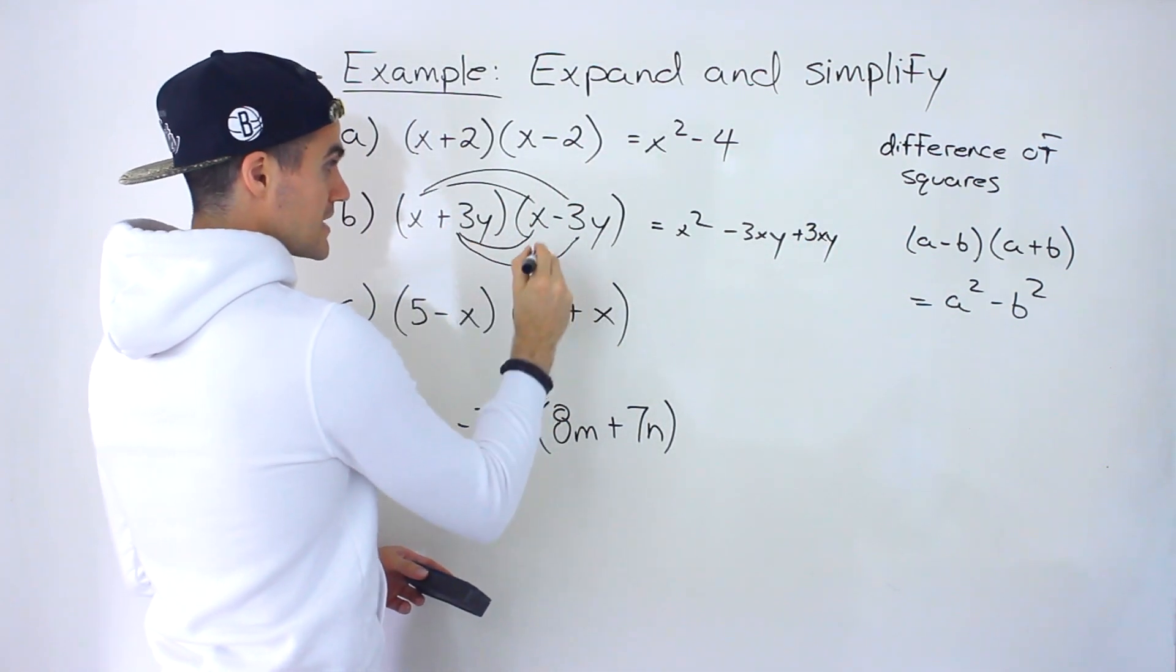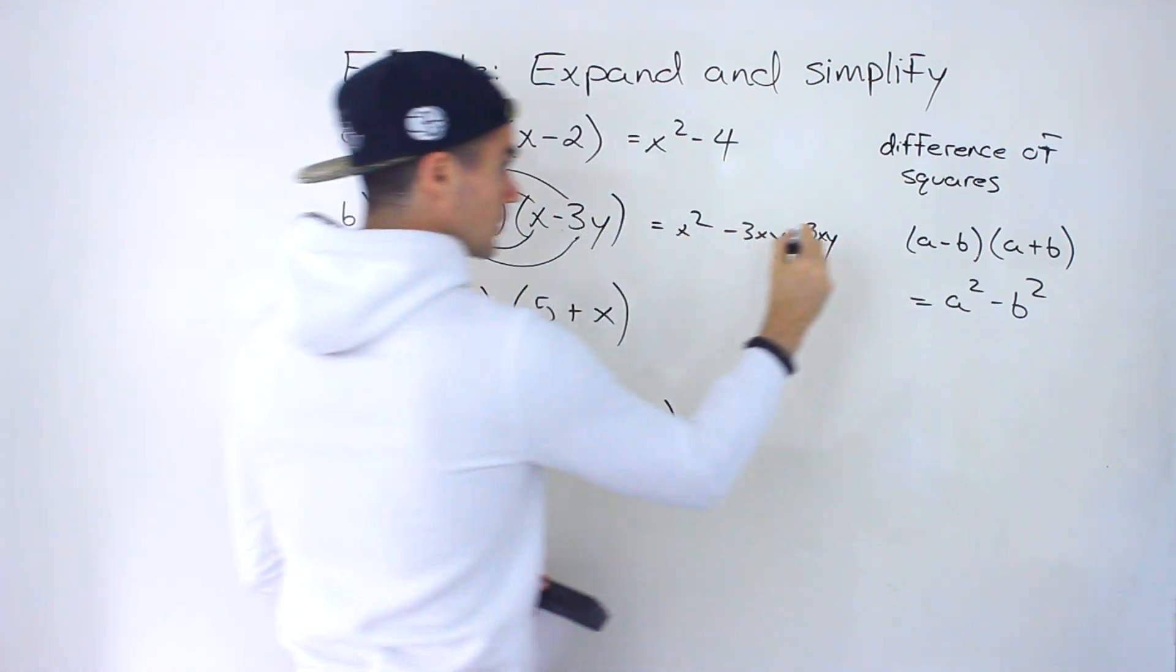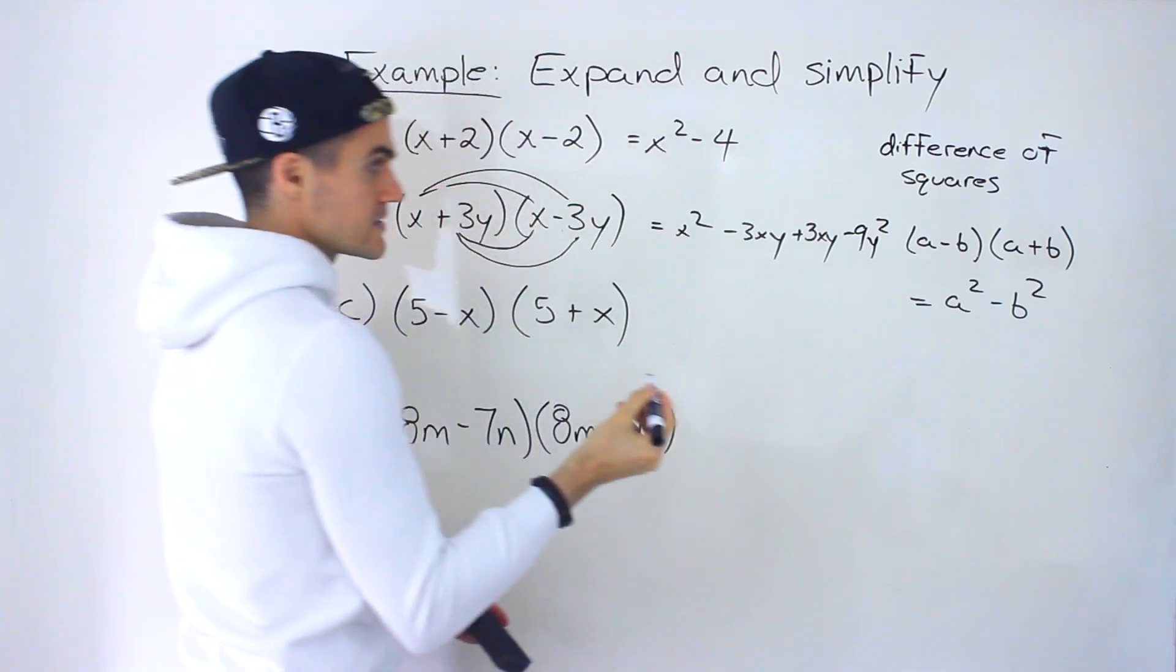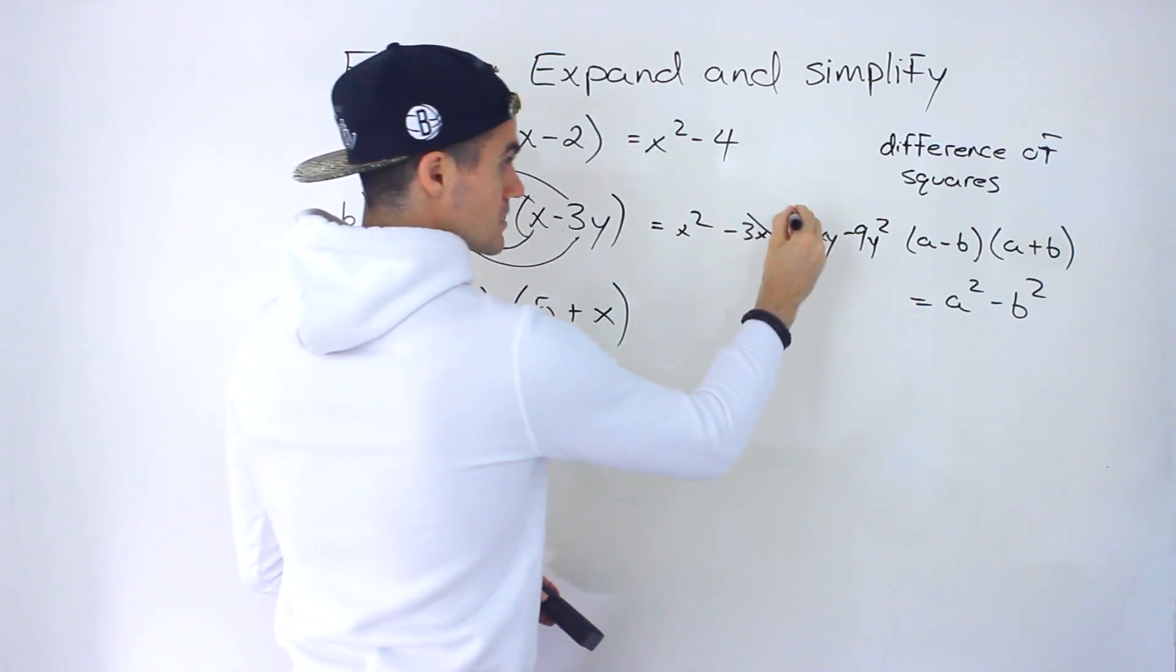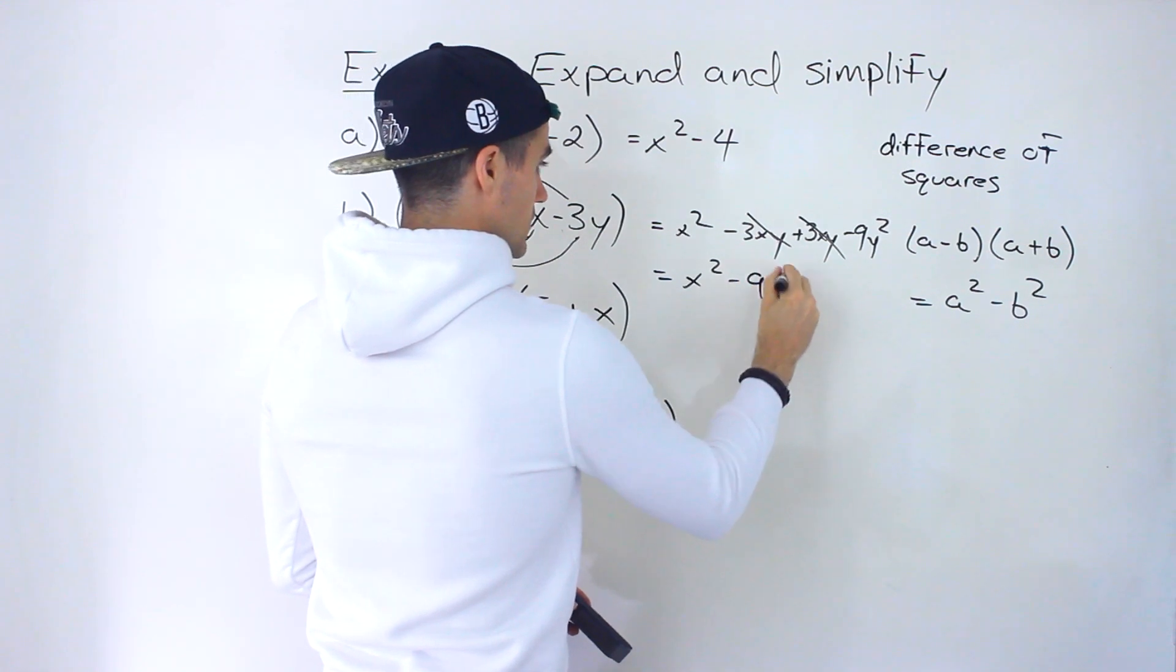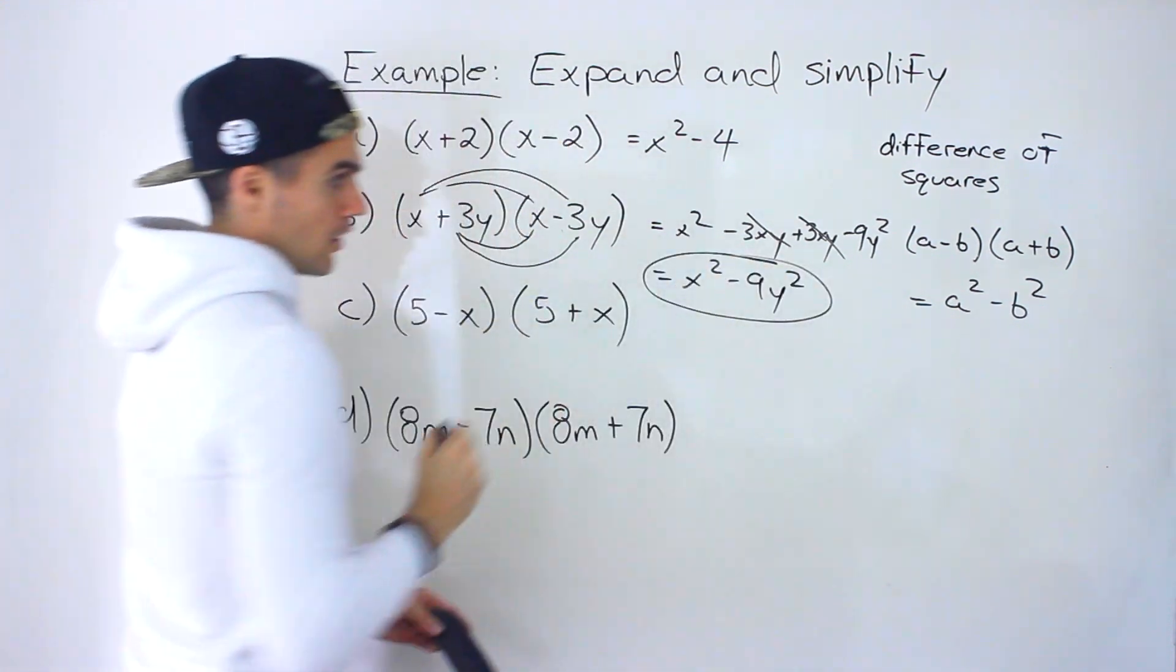And then positive 3y times negative 3y, 3 times negative 3 would give us minus 9. And then y times y would give you y squared like that. Notice those cancel out. So you end up with that product right there.